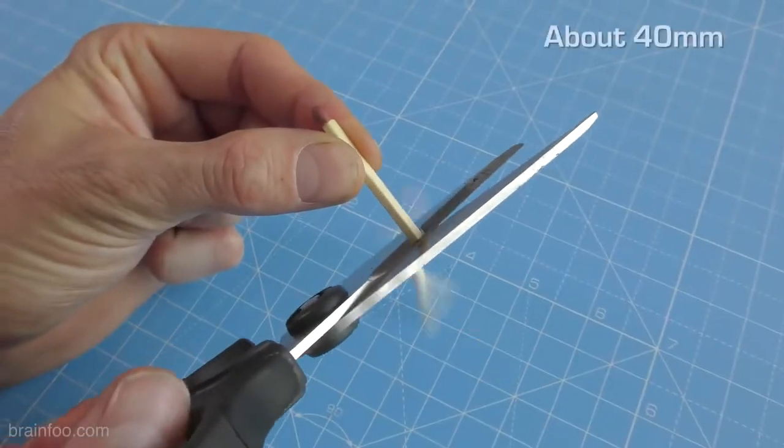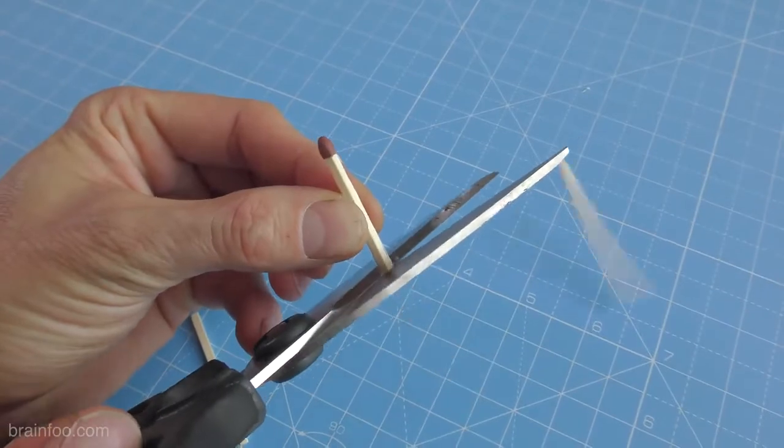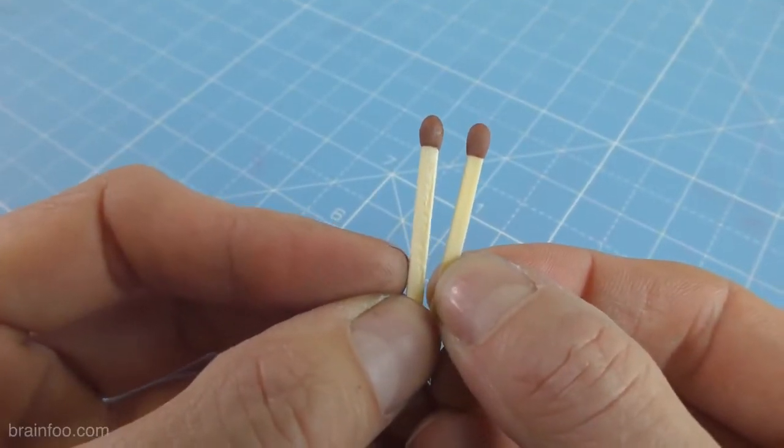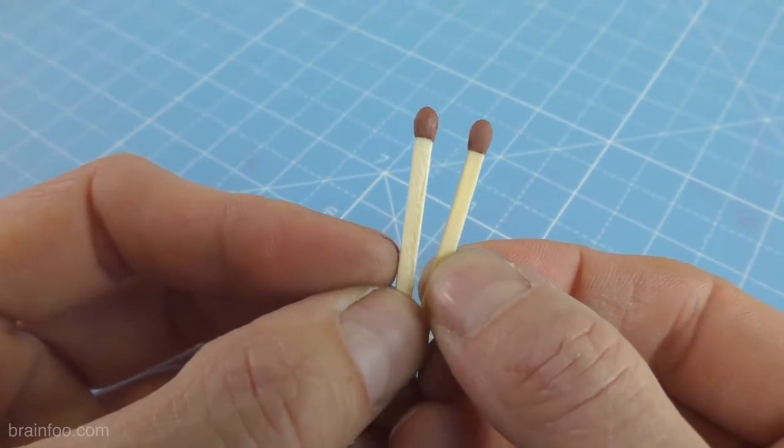Grab the two matches and cut them off about one and a half to one and three quarter inches from the match head. Now if you push the two matches together and there's a nice gap between the two heads like this you're good to go.